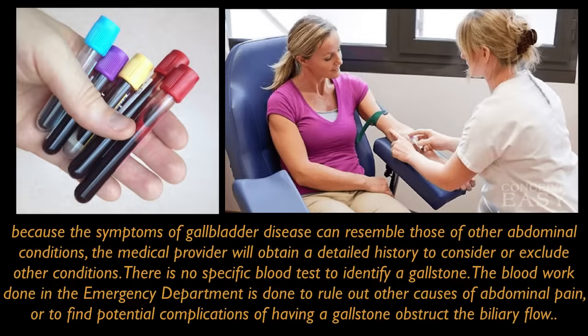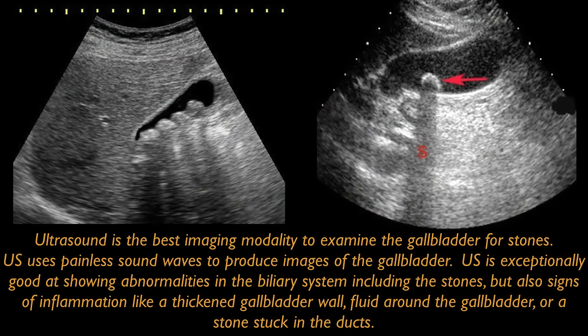Because the symptoms of gallbladder disease can resemble those of other abdominal conditions, the medical provider will obtain a detailed history to consider or exclude other conditions. There is no specific blood test to identify a gallstone. Blood work done in the emergency department is done to rule out other causes of abdominal pain or to find potential complications of having a gallstone obstructing the biliary flow. Ultrasound is the best imaging modality to examine the gallbladder for stones. It uses painless sound waves to produce images and is exceptionally good at showing abnormalities including stones, signs of inflammation like a thickened gallbladder wall, fluid around the gallbladder, or a stone stuck in one of the ducts.